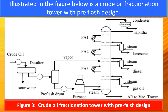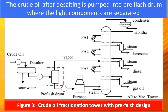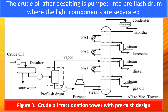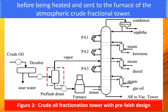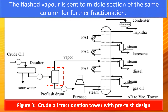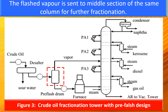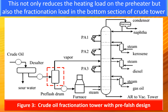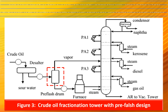Illustrated in the figure below is a crude oil fractionation tower with a pre-flash design. The crude oil after desalting is pumped into a pre-flash drum, where the light components are separated before being heated and sent to the furnace of the atmospheric crude fractionation tower. The flash vapor is sent to the middle section of the same column for further fractionation. This not only reduces the heating load on the preheater but also the fractionation load in the bottom section of the crude tower.